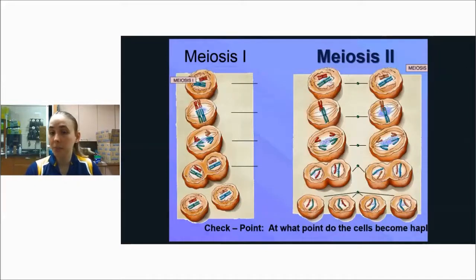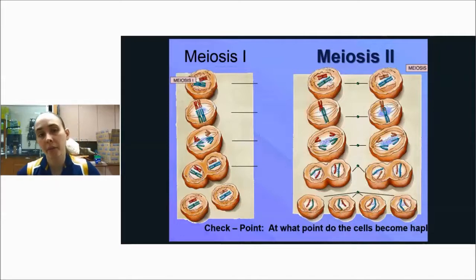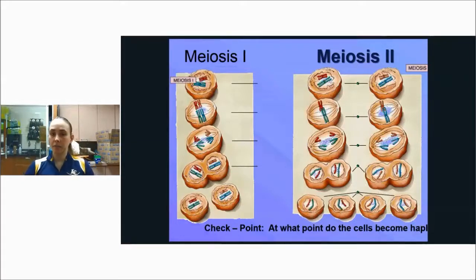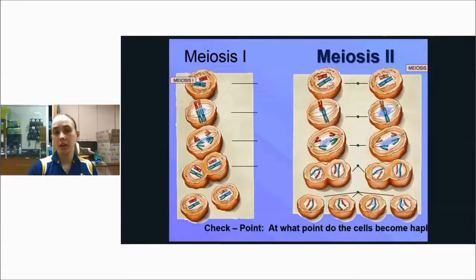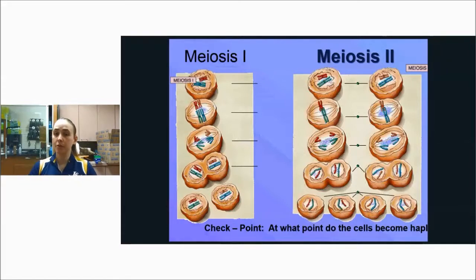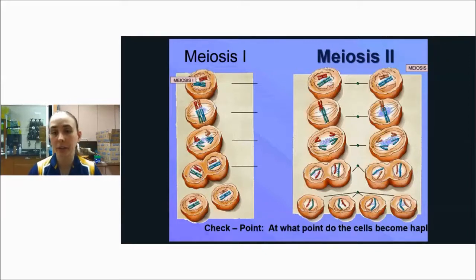At what point do cells become haploid? Here is meiosis one on the left and meiosis two on the right. Labeling all cells through prophase, metaphase, anaphase, and telophase one for meiosis one, and prophase, metaphase, anaphase, and telophase two for meiosis two — at the end of telophase one, you should write down that the cells are now haploid.